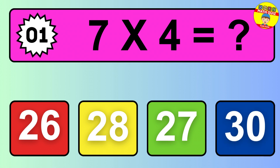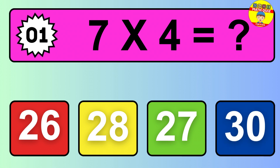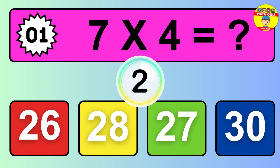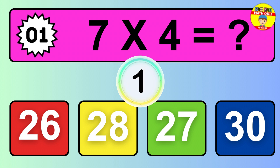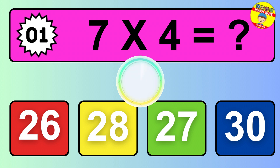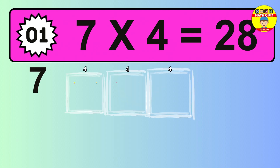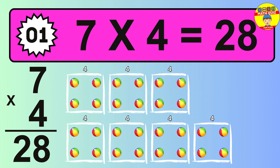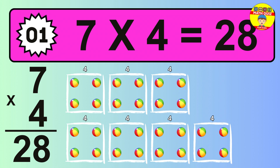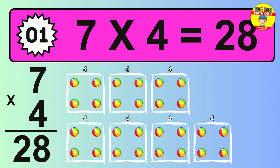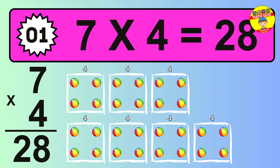Question 1. 7 times 4 equals what? The answer is 7 times 4 is 28. To calculate, we have 7 groups with 4 balls each one. So how many balls do we have? 28 balls.